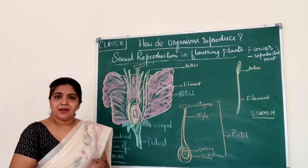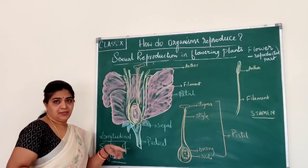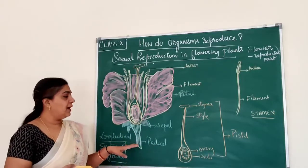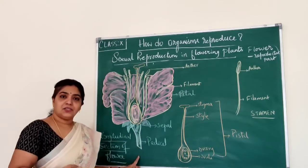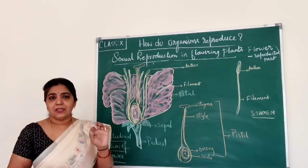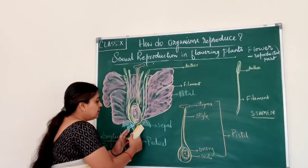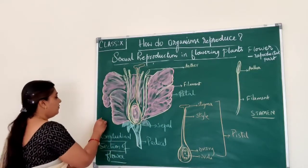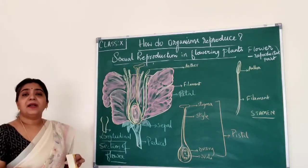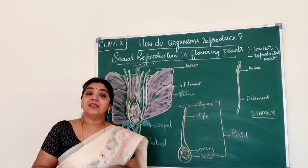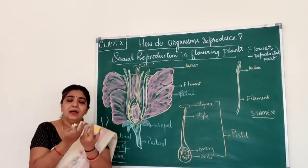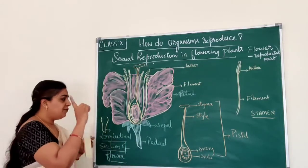We know the different parts of the flower. The flower has a stalk called the pedicel. With the help of the pedicel, it is attached to the stem. Here we can see a swollen part — this swollen part is called the thalamus, or it is also called the receptacle. The receptacle holds all the parts of the flower together.